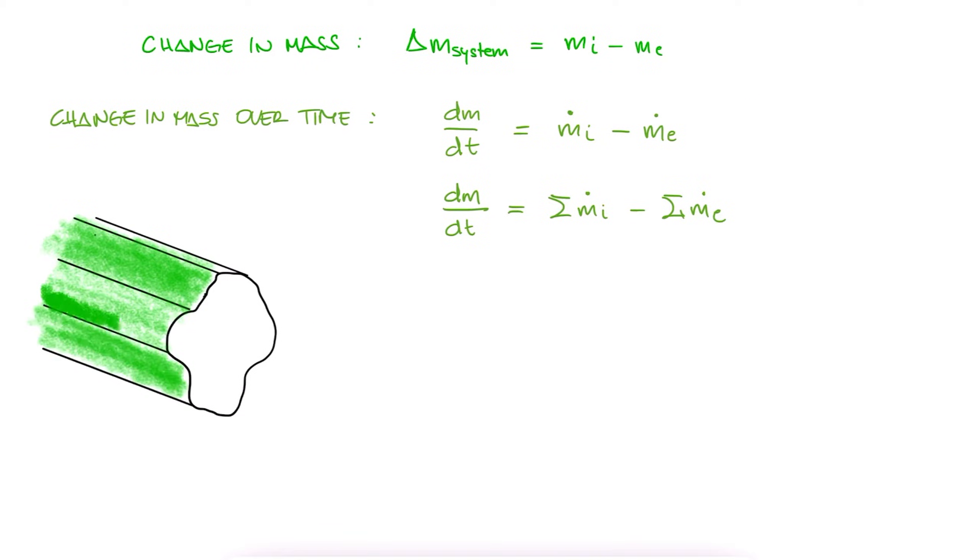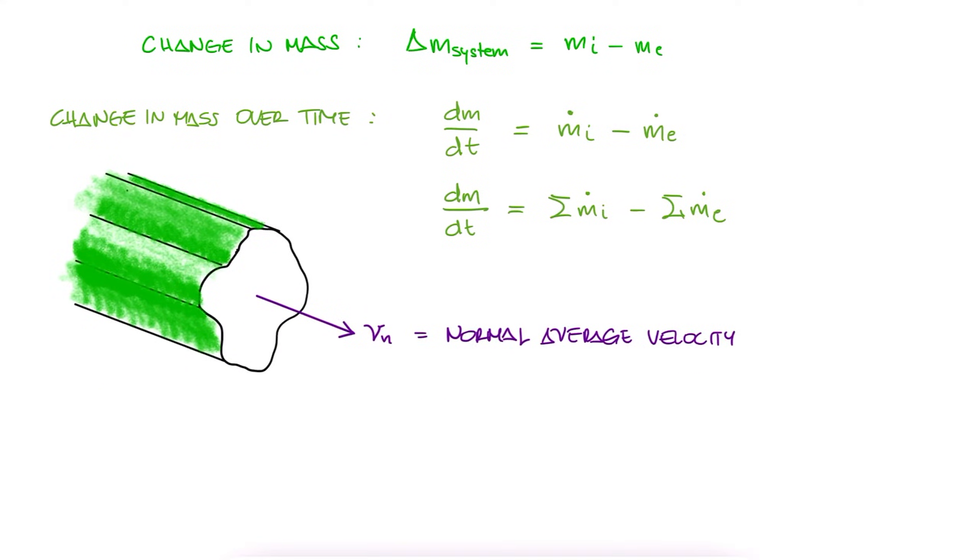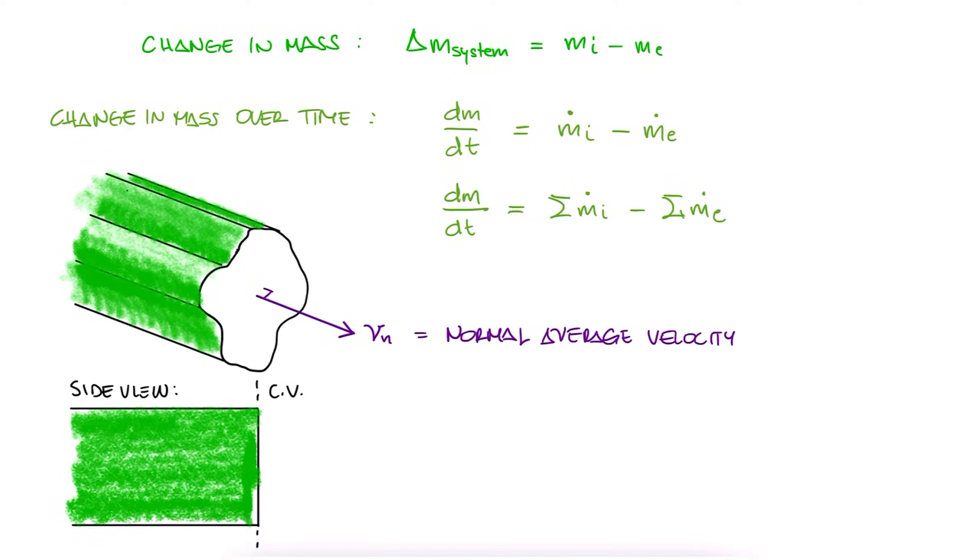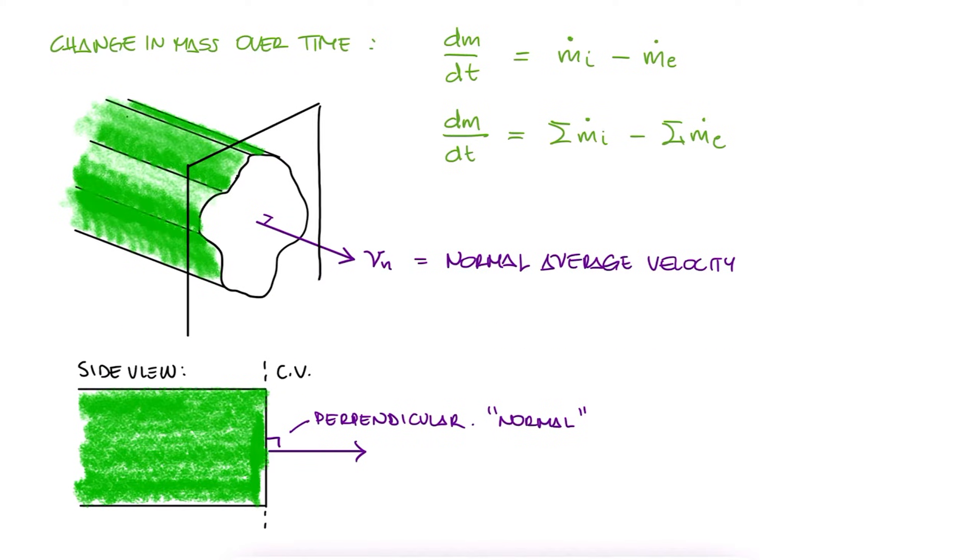For any shape of inlets or outlets, the fluid passing through them will be traveling at an average velocity v, and we denote it with an n subscript vn, so that it's clear that we are referring to the normal velocity. This is normal to the area of the inlet or outlet that exists on the surface of the control volume.